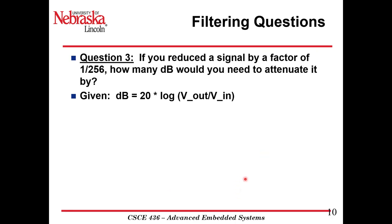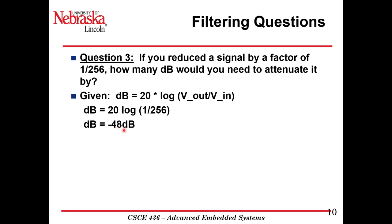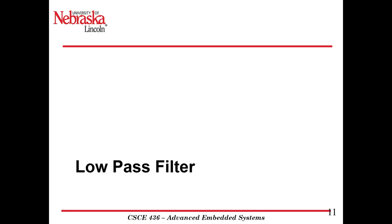Question three: if you reduce the signal by a factor of 1 over 256, how many decibels of attenuation is that? We plug in V_out over V_in as 1 over 256 into 20 log. We get minus 48 dB — basic plug-and-chug with the equation.